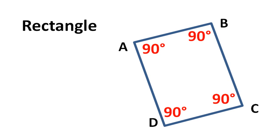So we see that a rhombus is a parallelogram in which all the sides are equal, and a rectangle is a parallelogram in which all the angles are equal.